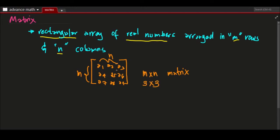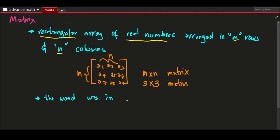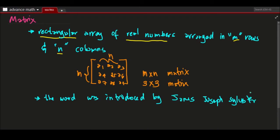The word 'matrix' was introduced by James Joseph Sylvester in the year 1850. He is an English mathematician. Again, the size of a matrix is determined by the number of its rows and its columns.